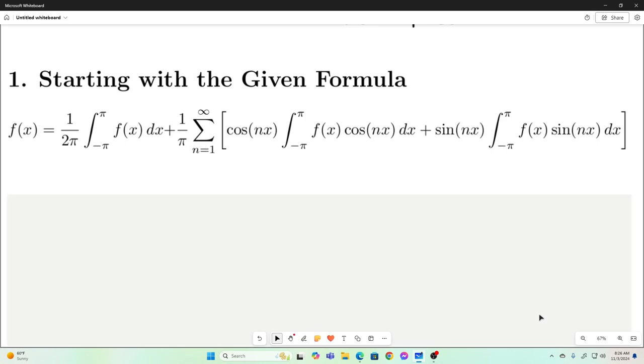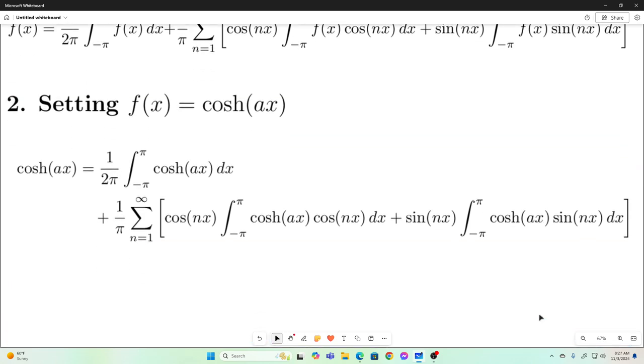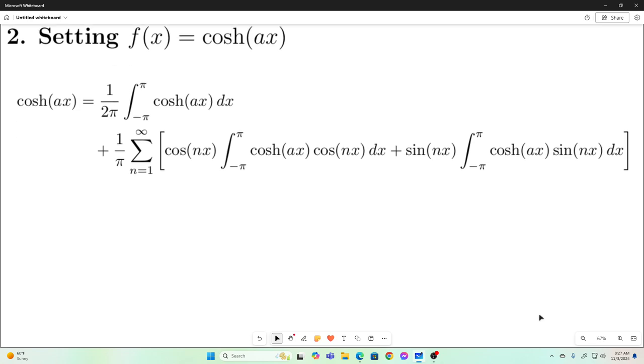Okay, so what we're going to do is we're just going to let our f of x equal the hyperbolic cosine of ax. And in my last video, I just let it be the hyperbolic cosine of x. So now we're just introducing an ax there. All right, so plugging hyperbolic cosine of x into our formula gives us this.